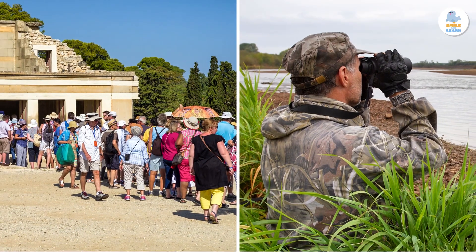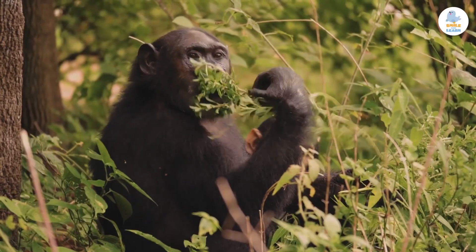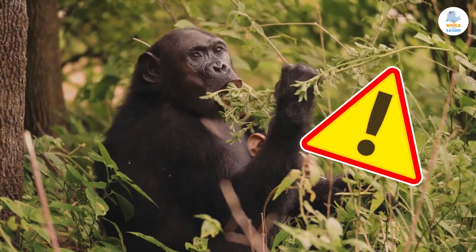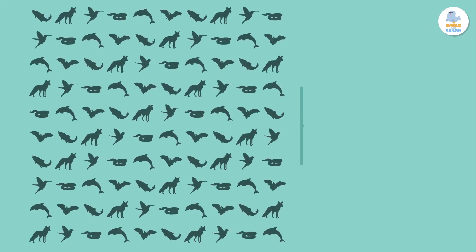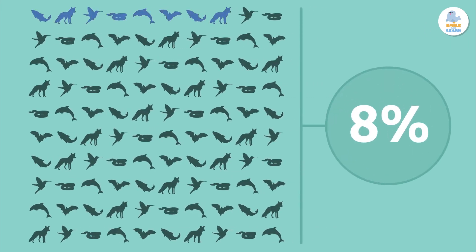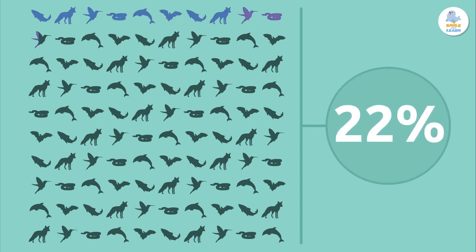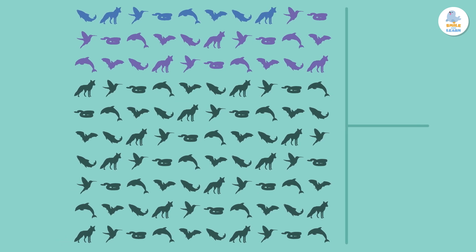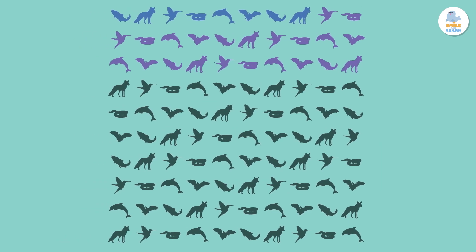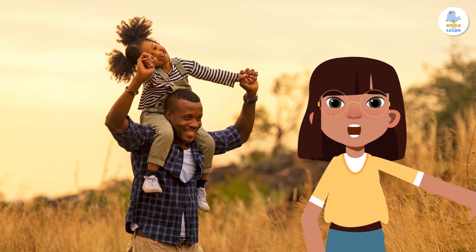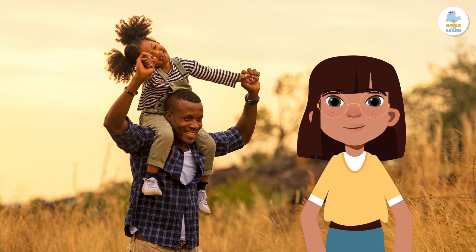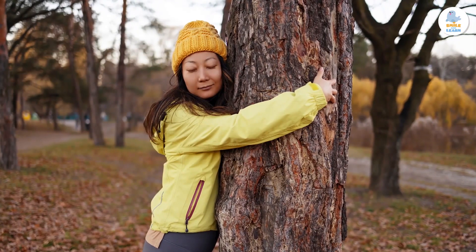In addition, some activities such as mass tourism or poaching are endangering many of the planet's species. Of all animal species known to date, many are at risk — but we still have time to help stop it.